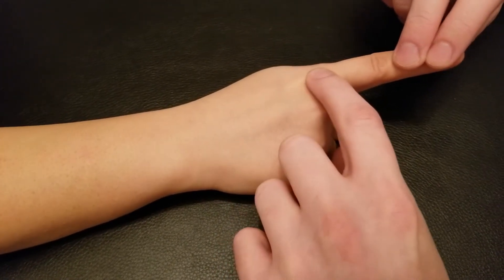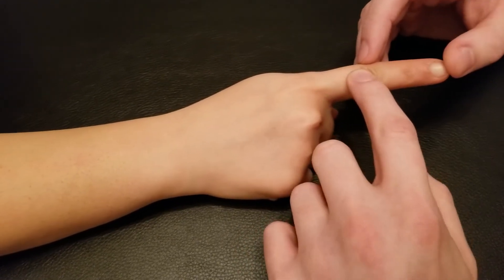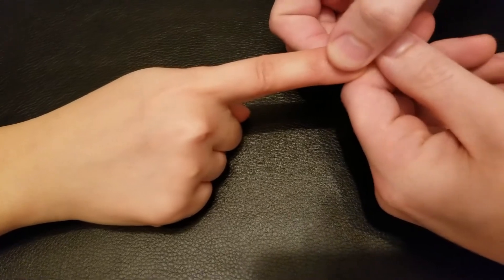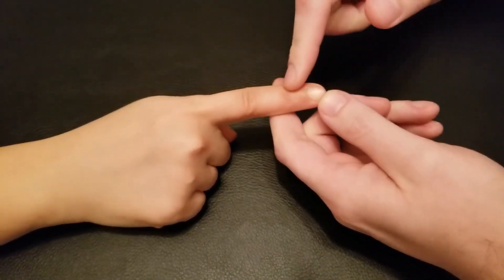It blends with extensor digitorum and therefore it's going to be inserting just like digitorum onto the middle and distal phalanx of this second finger.